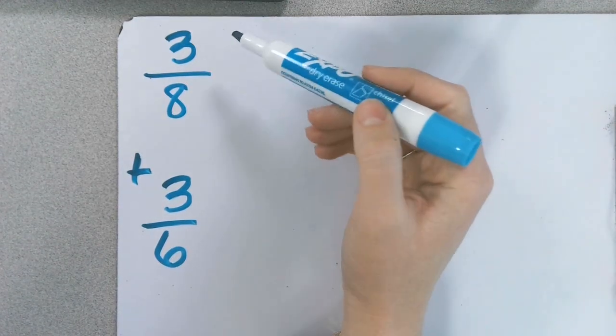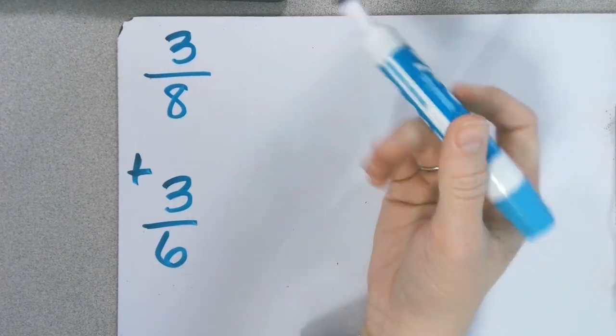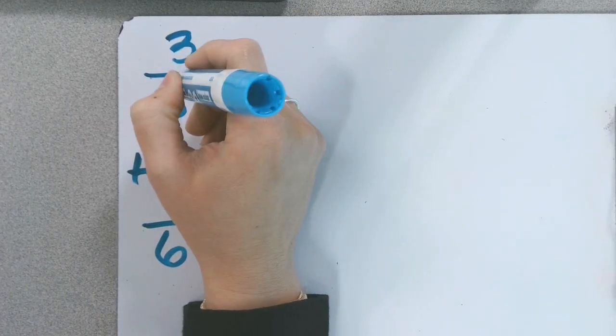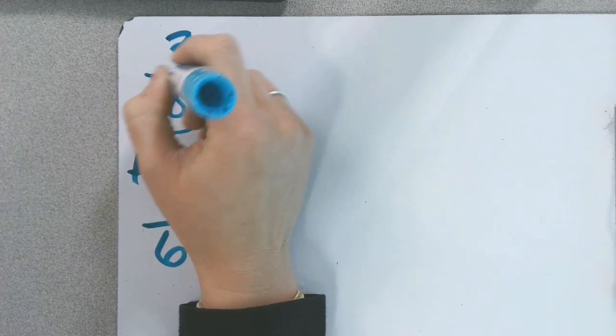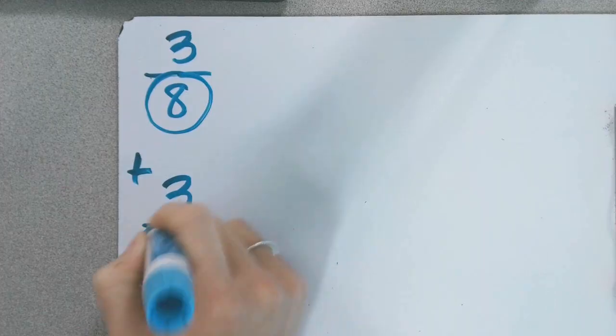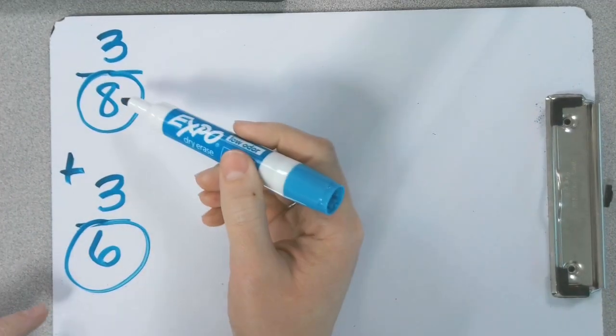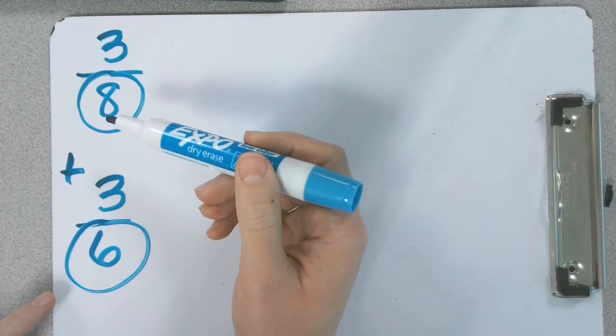All right, here we have another example of adding fractions with unlike denominators: 3 eighths plus 3 sixths. So we're going to start by circling the denominators, 8 and 6. And we're going to ask ourselves, are those two numbers the same? No.